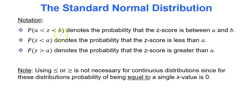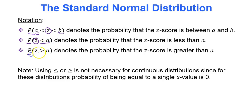First order of business: notation. P represents probability, then you have the parentheses. The probability that a z-score is between two values a and b is written P(a < z < b). If you have P(z < a), that's the probability that some z-score is less than some value a. If you have P(z > a), that's the probability that some z-score is greater than a. So we'll be looking for between probabilities, less than, and greater than.